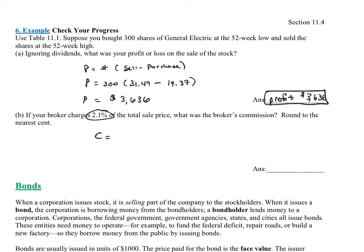what we do is the number of shares times the sell price times that percentage rate. So in this case, it was 300 shares. The sales price was $31.49.